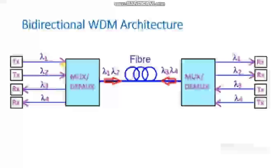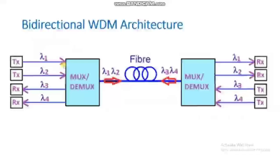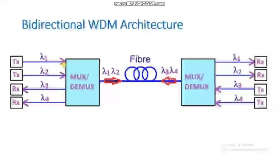λ1 and λ2 are the transmitting wavelengths. The multiplexer combines these wavelengths and sends them to optical fibers. Then the demultiplexer separates these wavelengths and transmits them to receivers. λ3 and λ4 are also transmitting signals. The multiplexer combines these signals and transmits them to optical fibers, then the demultiplexer separates them and sends them to receivers.